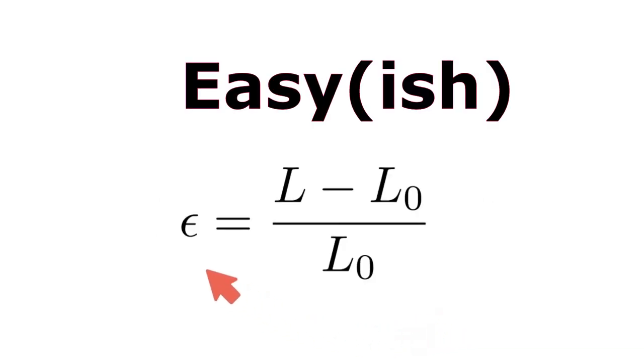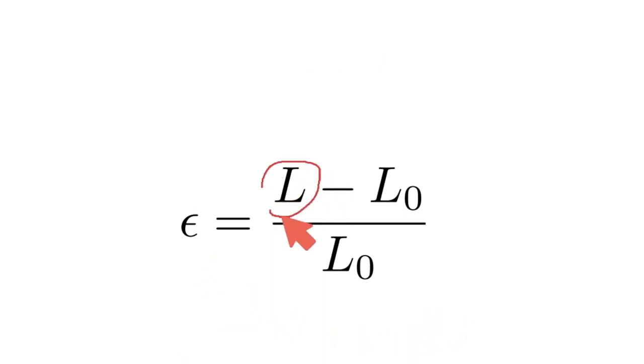This is an equation for strain. Epsilon stands for strain, but we're going to solve for length L. Now one mistake I see people make very often is they want to cancel these. And yes, that would be convenient if we could do that, but we cannot.